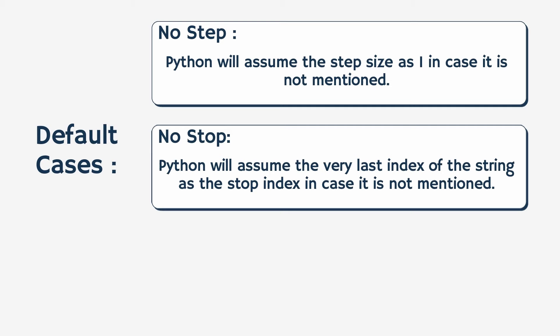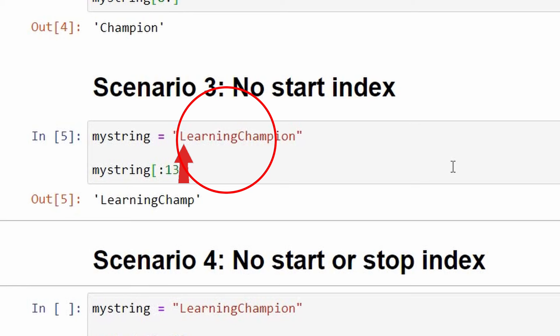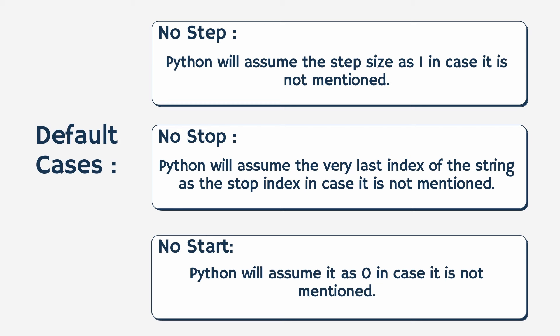Scenario 3: no start index. Let's consider another scenario where I will not give the starting index but will only give the stop index while grabbing the substring. Here, as you can see, I have given 13 as the stop index without any start index. When I execute this command, the output is 'learning champ', which shows that Python has automatically assumed the starting index as 0. Hence, in a scenario where we don't specify any starting index, Python assumes it as 0 by default.